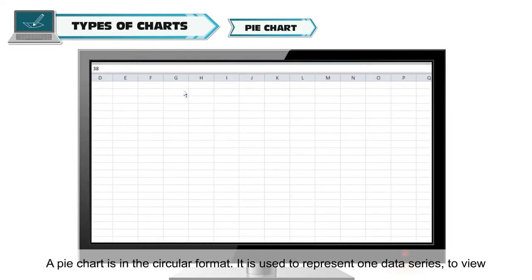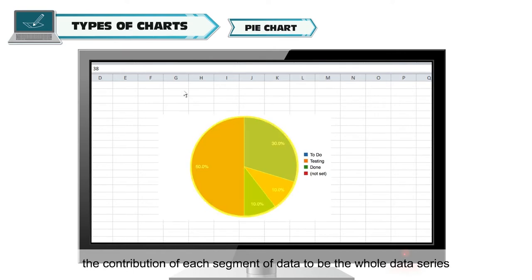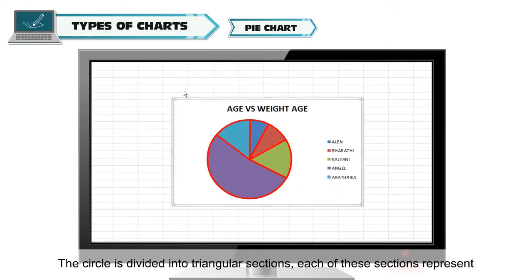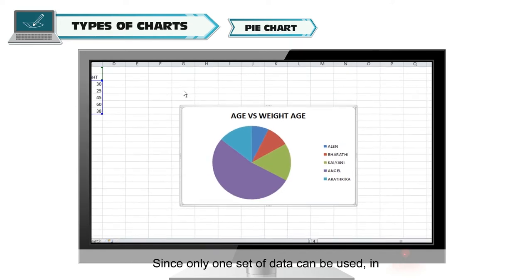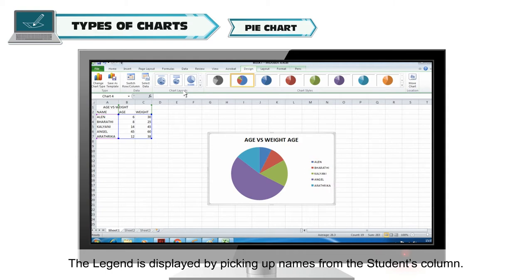Pie chart: A pie chart is in circular format. It is used to represent one data series to view the contribution of each segment of data to the whole data series. A pie chart can only be drawn for one set of data series. The circle is divided into triangular sections, each representing quantities as a percentage which adds up to 100. In the example, age is plotted in the pie chart, and the legend is displayed by picking up names from the students column.